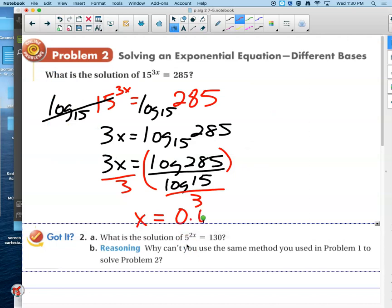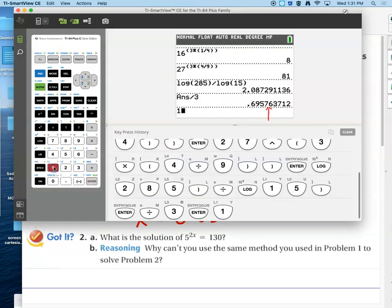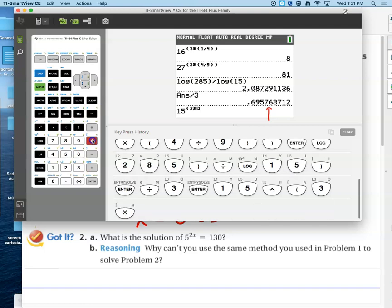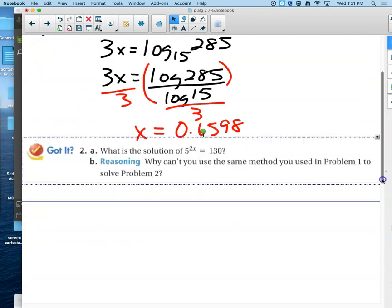Now because we had to round, if we check this one, it's not going to come out perfect unless we leave in the answer that we just had. I want to raise 15 to the 3 times 0.6958 power. So 15 to the 3 times second negative pulls up the answer. And there it is, we get the 285. So these are checkable if you do it carefully.